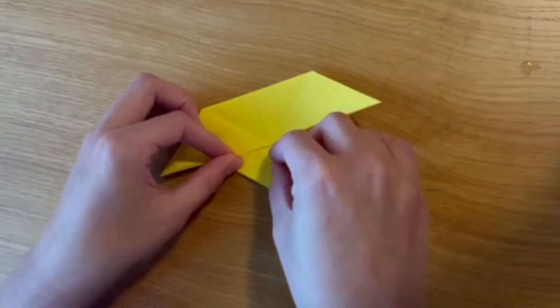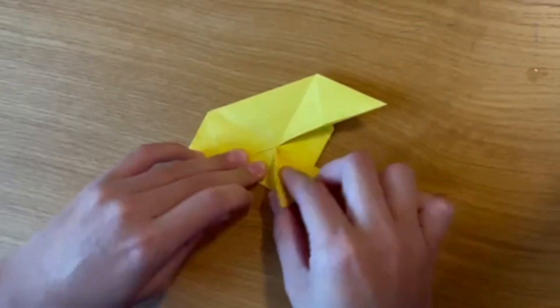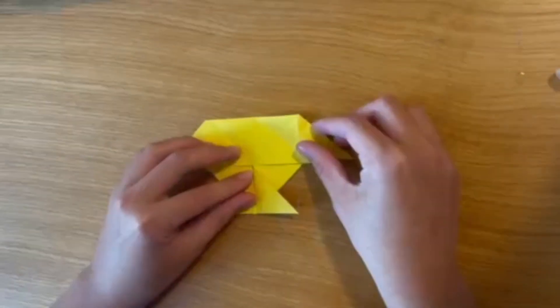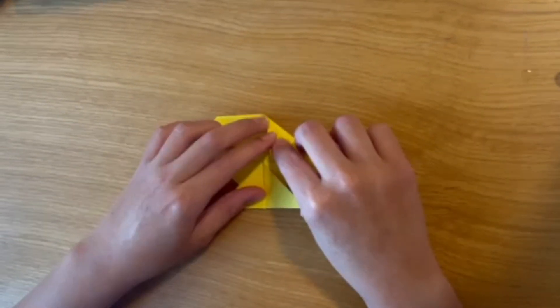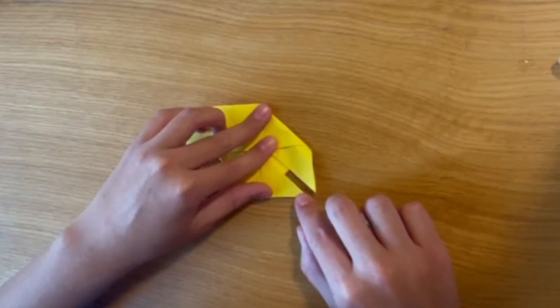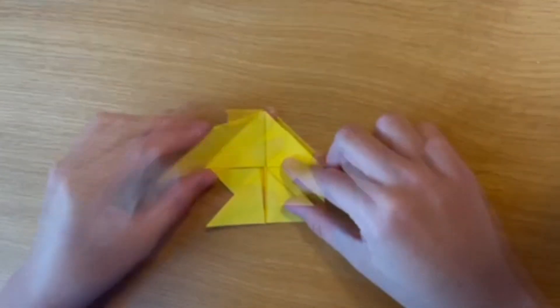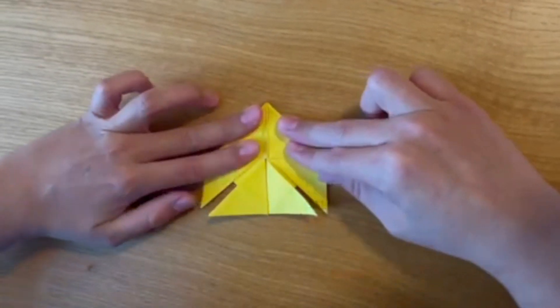Just like that, and then fold backwards. Next you're going to get one of the sides and fold it just like that, leaving a little bit of room between this flap and this flap. You're going to do the same to the other side and then press down.